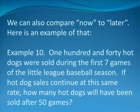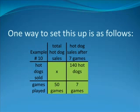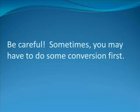Example 10: One hundred and forty hot dogs were sold during the first seven games of the Little League Baseball season. If hot dog sales continue at this same rate, how many hot dogs will have been sold after 50 games? One way to set this up is as follows. We're looking for total hot dog sales after 50 games. Hot dog sales after seven games, our reference amount, will be our column title for the third column. Our second row title is Hot Dogs Sold. Our reference is 140 hot dogs sold. The third row is games played. That's 50 games in column two, and seven games in column three. The second column is later. The third column is now.